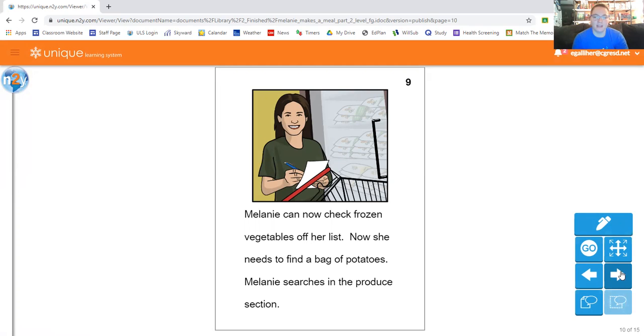Melanie can now check frozen vegetables off her list. Now she needs to find a bag of potatoes. Melanie searches in the produce section. So the produce section is where all the vegetables and stuff like that is.